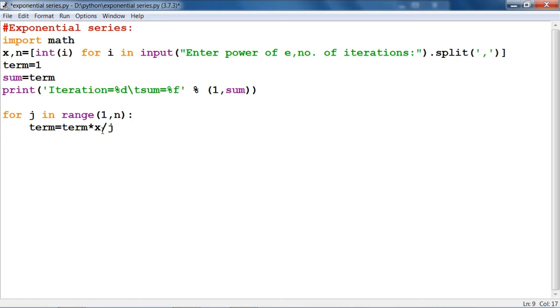And next we have to define the sum in the same way. Sum plus equal to term, it will update the sum. And then we have to take the print of the iteration and sum. Iteration equal to percentage d, backslash t, sum equal to percentage f, apostrophe, space, percentage j plus 1 comma sum.